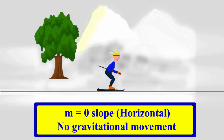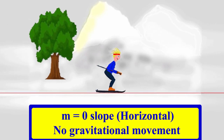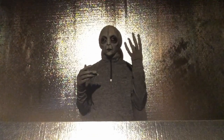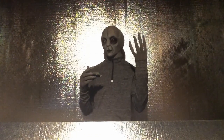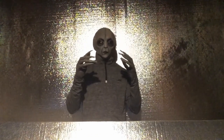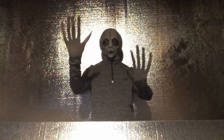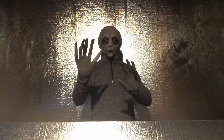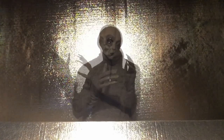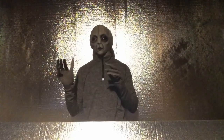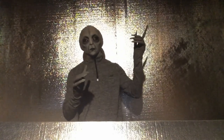For the zero slope, think of the skier standing motionless because he is on a flat slope. There are four categories, and a random line will live in one of those four categories.